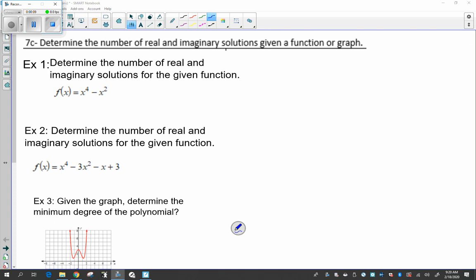So the first one will be given a function, f of x equals x to the 4th minus x squared. Looking at the biggest degree is 4, so this means there are 4 solutions to the problem, 4 total solutions.